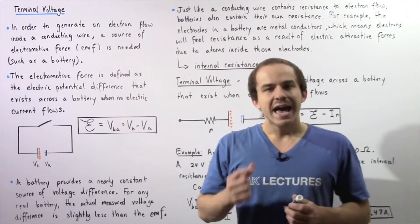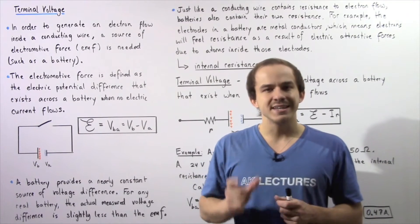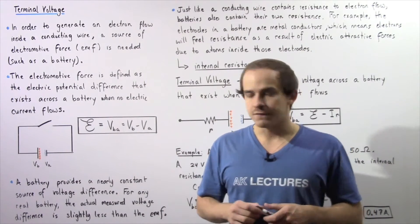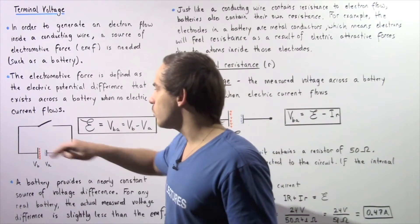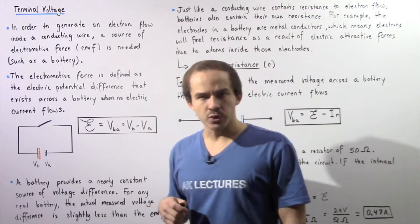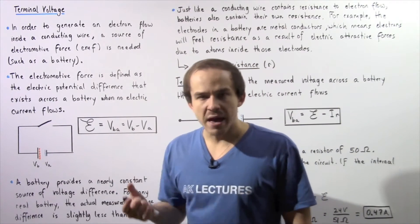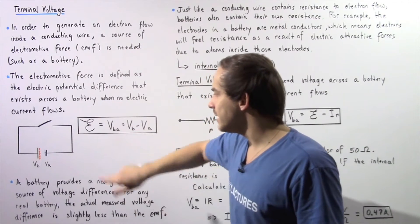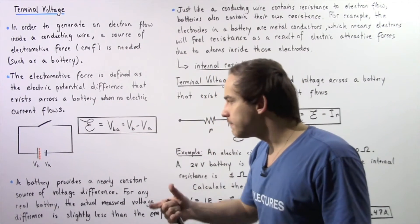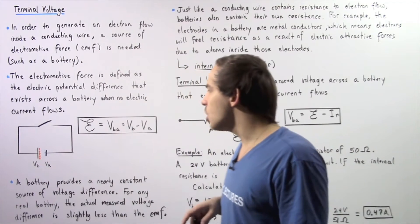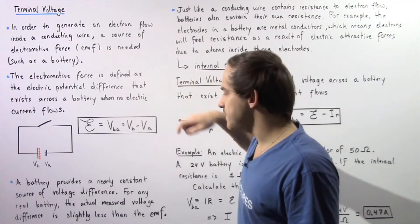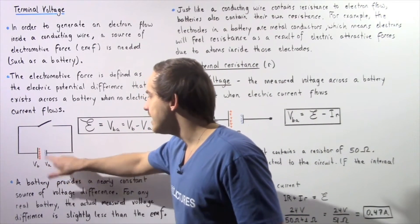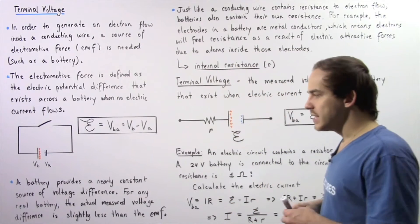We define electromotive force, or simply EMF, as the electric potential difference that exists across a battery when no electrons flow within that circuit. For example, if we take an open circuit and place a battery, the battery will have a certain EMF, given by the symbol equal to the difference between the higher potential and the lower potential — VB minus VA, where VB is the higher potential electrode and VA is the lower potential electrode.